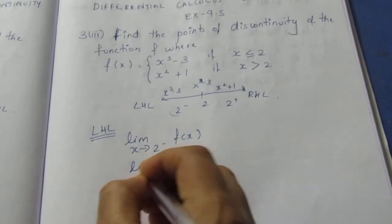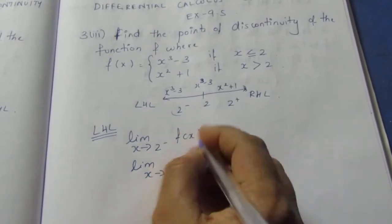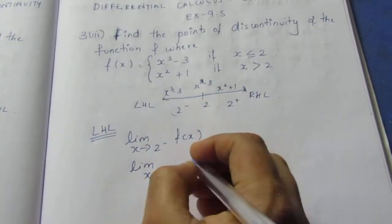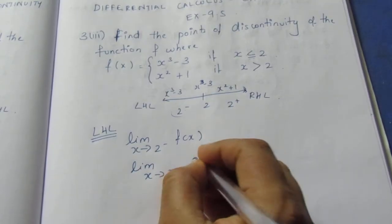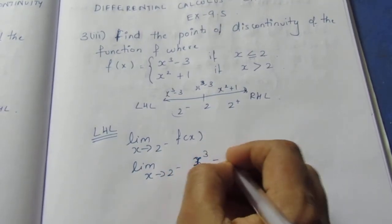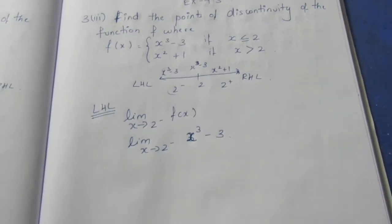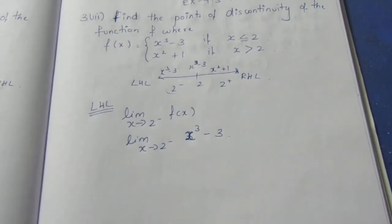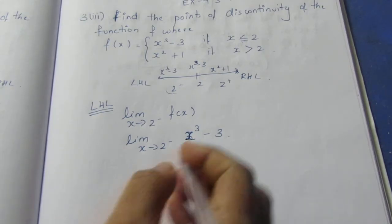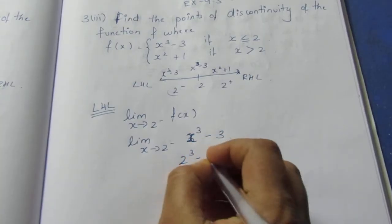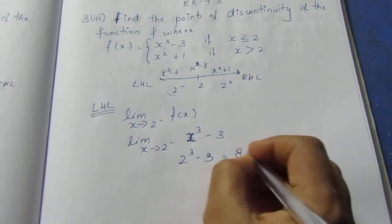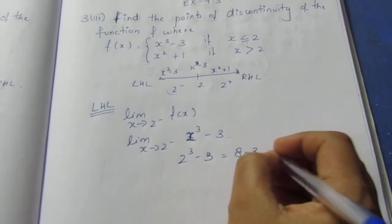Limit x tends to 2 minus of f(x), which is x cube minus 3. We substitute the value x = 2 minus. So we get 2 cubed minus 3, which equals 8 minus 3, that is 5.